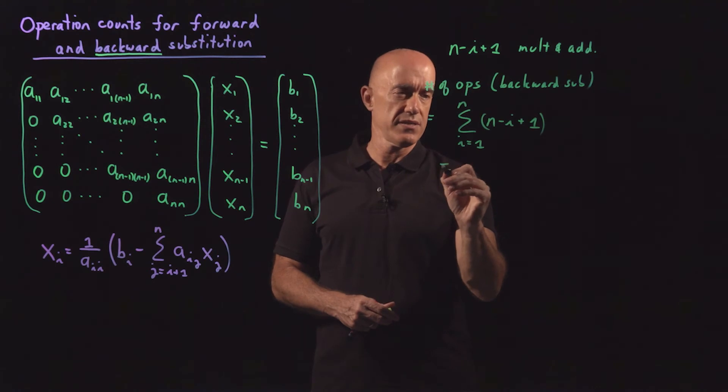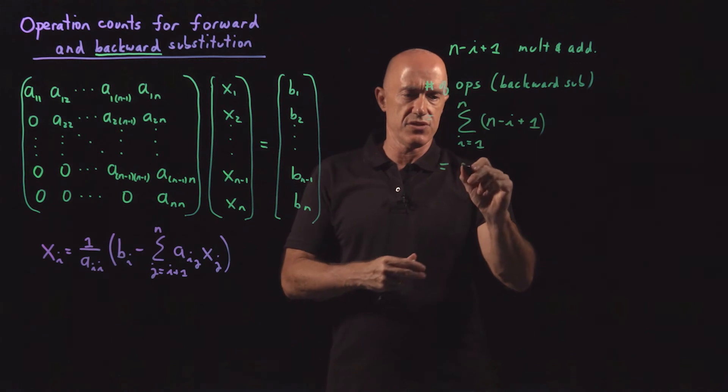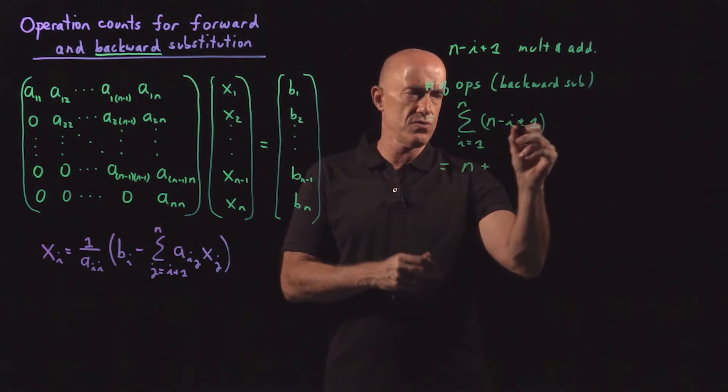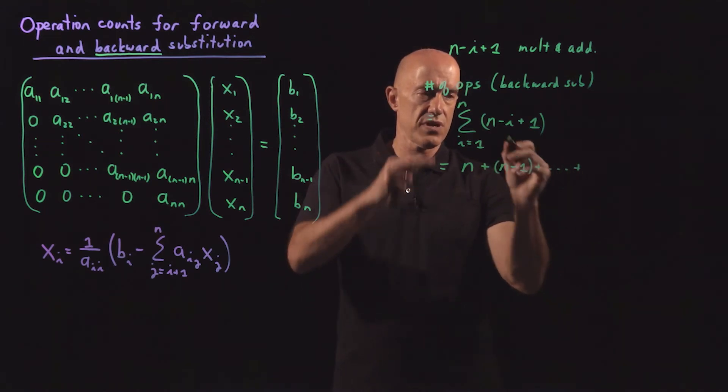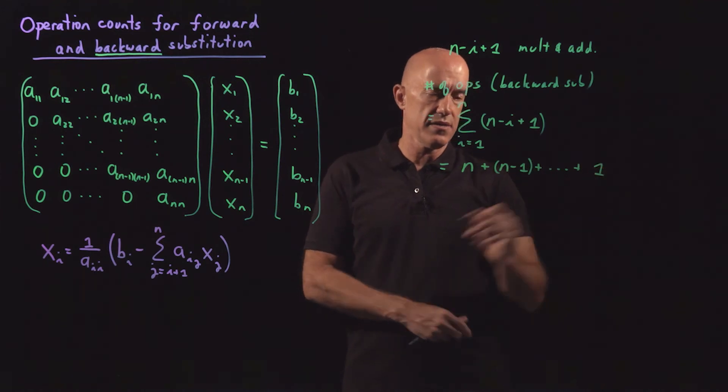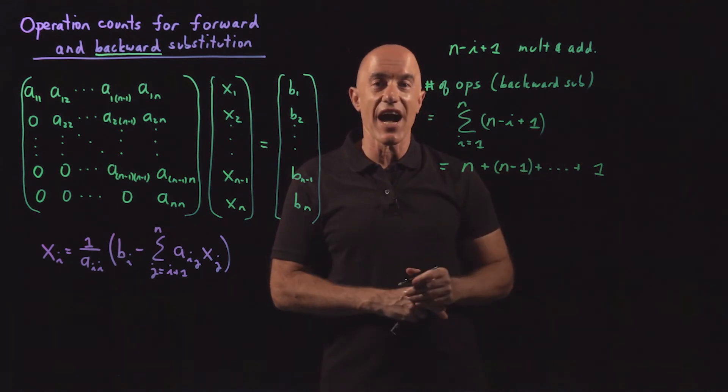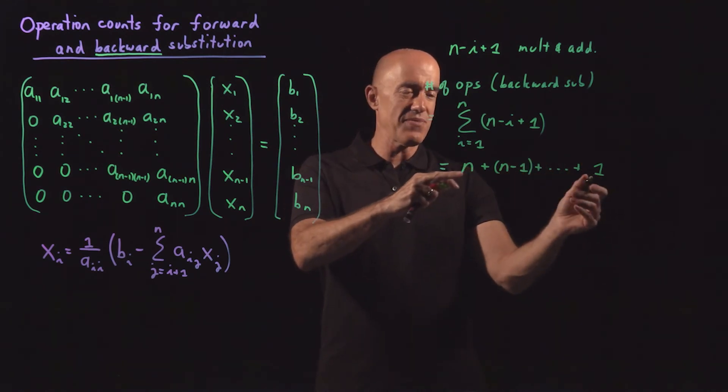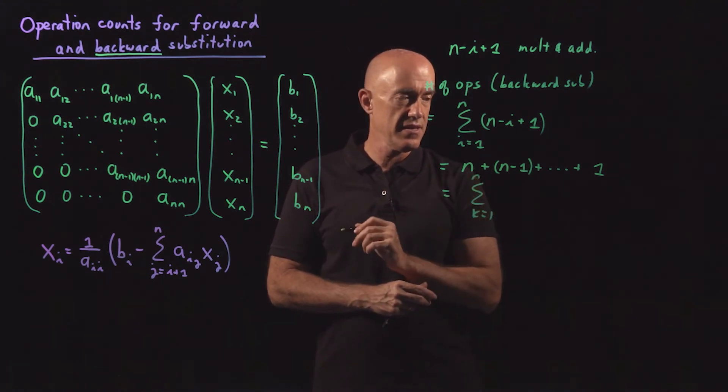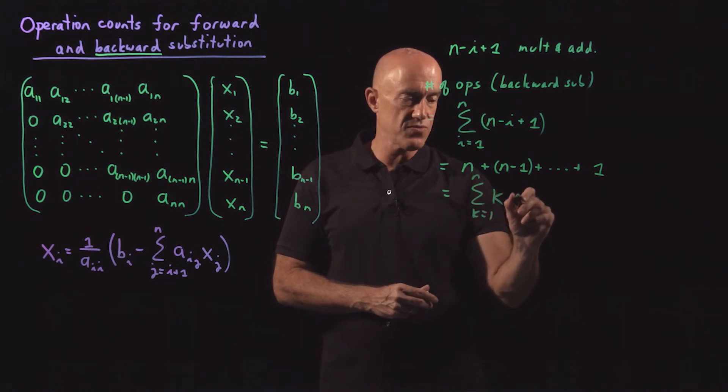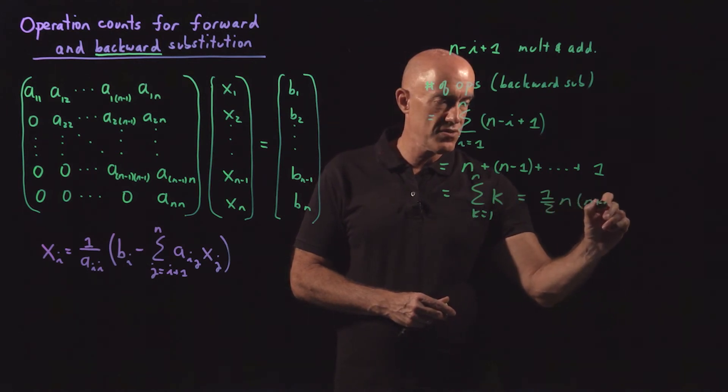Okay, what does this look like? When i is equal to 1, this is just n. When i is equal to 2, this is n minus 1. And it goes all the way down to when i equals n, it's 1. So it's just the Gaussian child's play, how to sum this. This one we just write as the sum from k equals 1 to n of k. That's one of our formulas. This is 1/2 n times n plus 1.